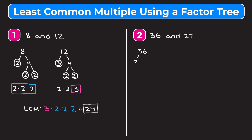We'll start with 2 and 18 — you could have started with 6 and 6 or 4 and 9, but it's easy to start with 2. Now we'll break up 18 into 2 and 9. Two is prime so we circle it. Then we break up 9 into 3 and 3, and circle both 3s since they're prime. So 36 can be written as 2 × 2 × 3 × 3.